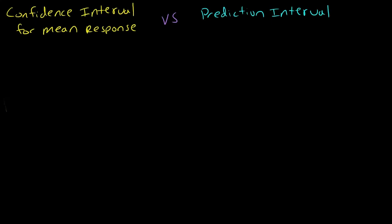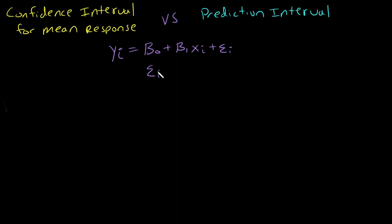In this video I want to talk about the difference between a confidence interval for mean response and a prediction interval. This idea generalizes to other models, but for this video let's consider just a simple linear regression model. So I have a slope, an intercept, one predictor, and a random error epsilon_i. We'll assume that epsilon_i follows a normal distribution with mean zero and variance sigma squared, for i equals 1 to n.